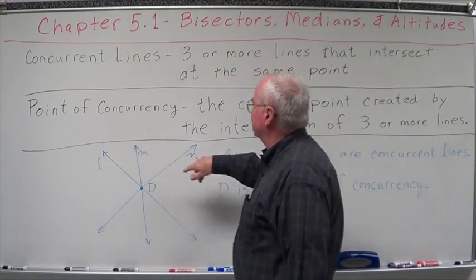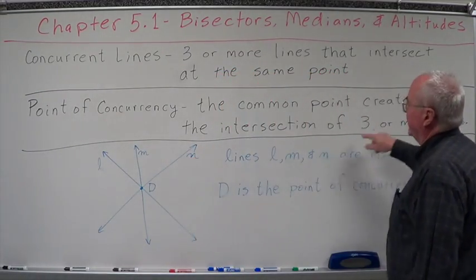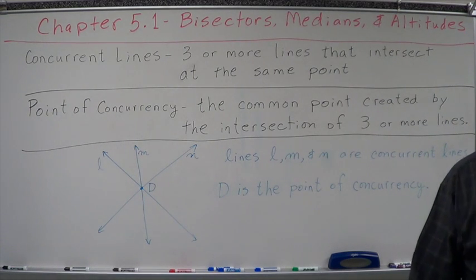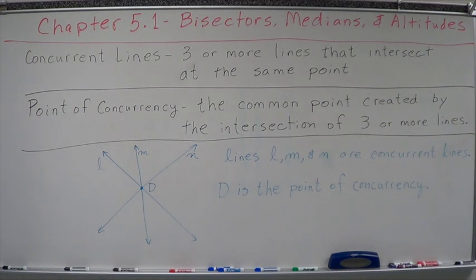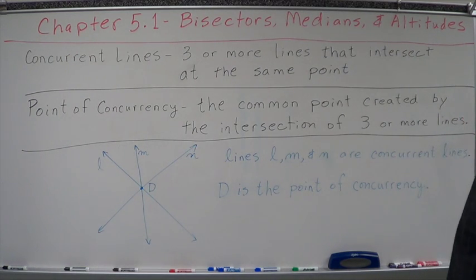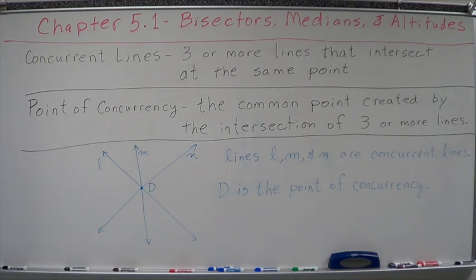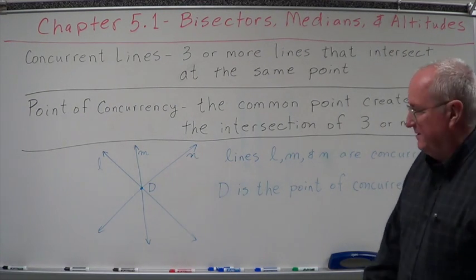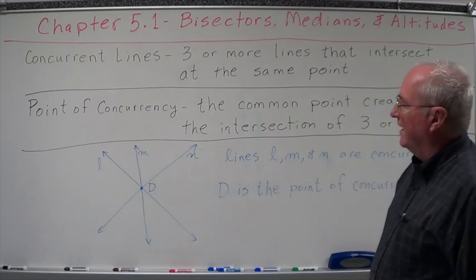The point of concurrency of those lines is the common point created by the intersection of three or more lines. It's sort of like a circular definition. Point of concurrency, well, that's the point where these three or more lines come together. What are concurrent lines? It's where they meet. Three or more lines meet at one point.